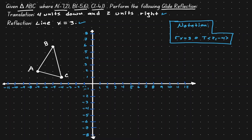Let's start with point C: move it four units down and two units to the right. After that movement, the new location is (-2, -3), which we call C'. Now let's translate point A four units down and two units to the right — we call that A'. Now let's translate point B four units down and two units to the right, ending up at (-3, 2), which we call B'.